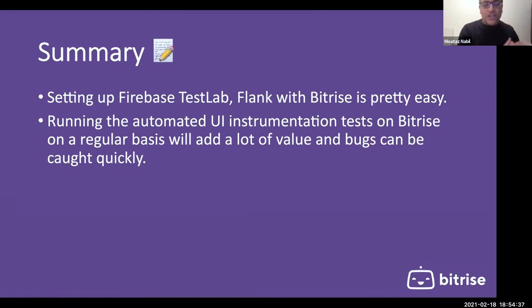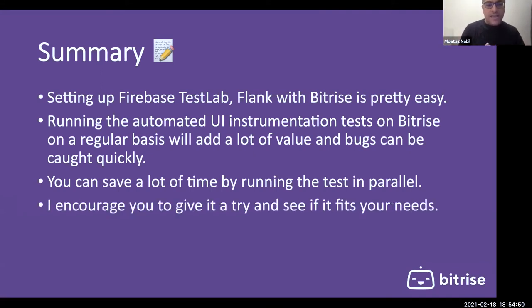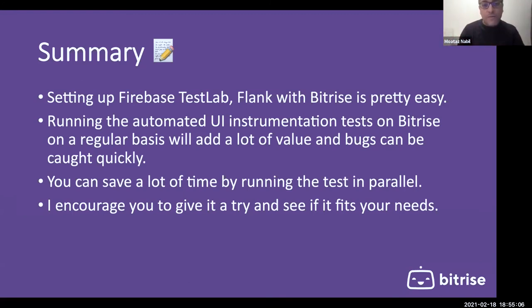The summary: setting up Firebase Lab, Flank, and Bitrise is pretty straightforward — just configure your project, get the service token or JSON file, generate your Flank file, and that's it. Running automation UI instrumentation tests on Bitrise on a regular basis means you can run CI on every PR. You can be confident about your application status and critical test cases. You can run end-to-end tests and catch bugs quickly at early stages — failing fast, which is the main point of CI. You can save a lot of time by running tests in parallel with this solution. I encourage you to try it if this solution fits your needs.